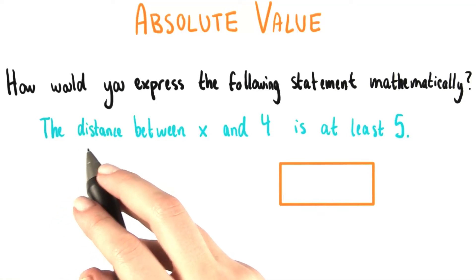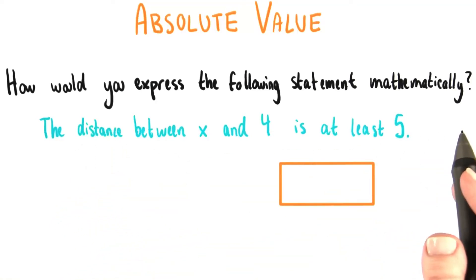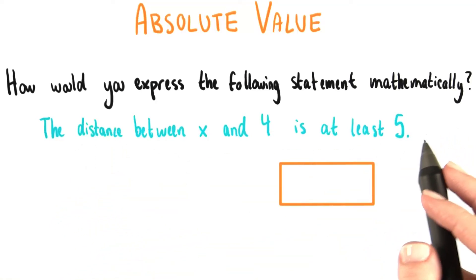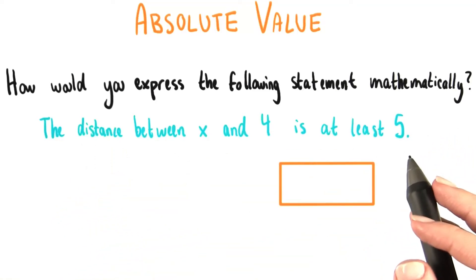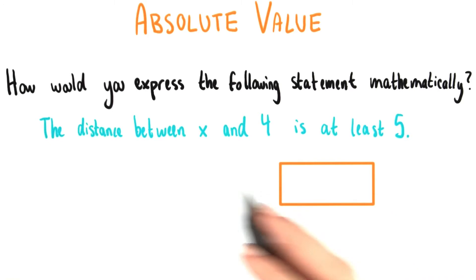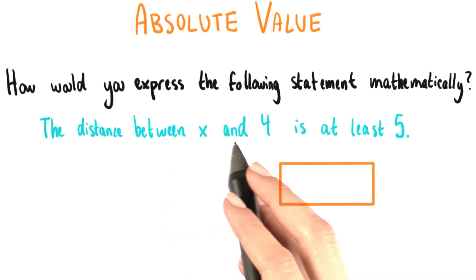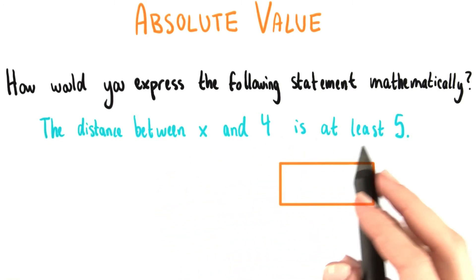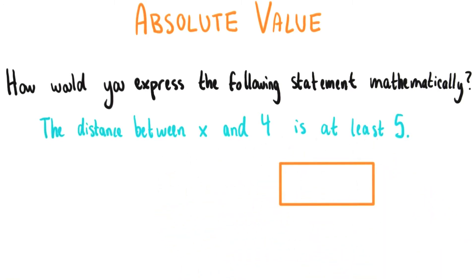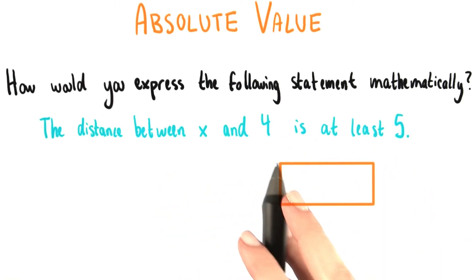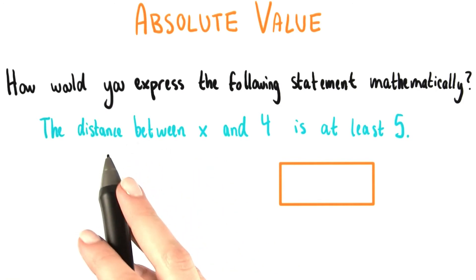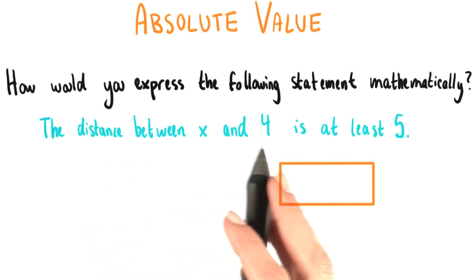Before, we said that we could translate our absolute value inequality to say that the distance between x and 4 was at most 5. Now, however, we have the distance between x and 4 is at least 5.